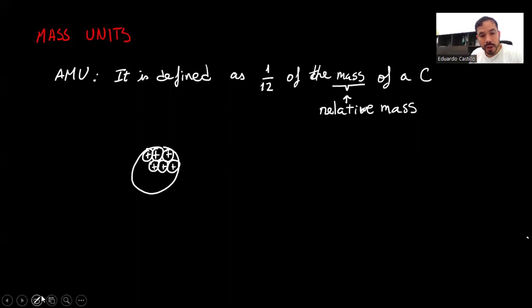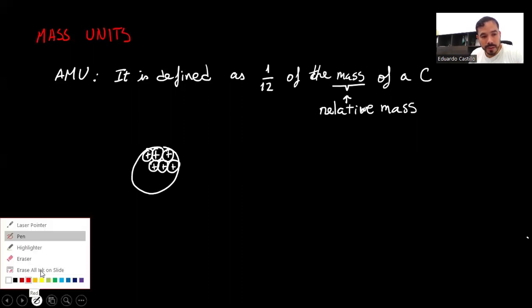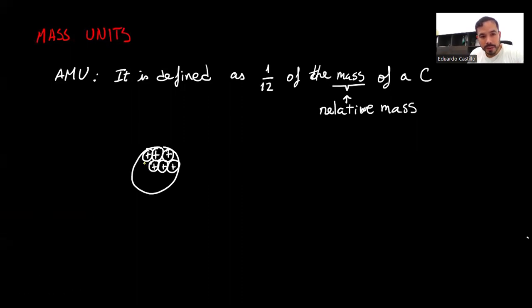And the most common carbon, which is carbon-12, also has six neutrons.